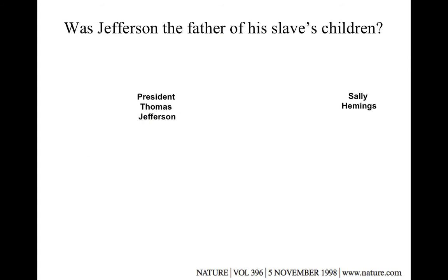Thomas Jefferson's slave, Sally Hemings, was a very pretty young girl who served as nursemaid to his own children. She traveled with him to France when he was ambassador there and looked after his young daughters. She was very light-skinned and could almost pass for white — in fact, three of her children did pass into white society.